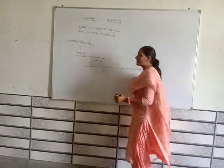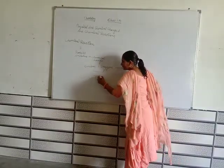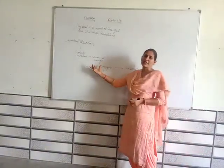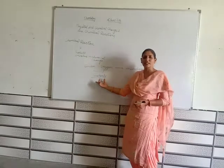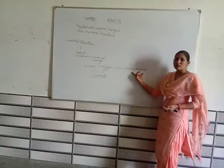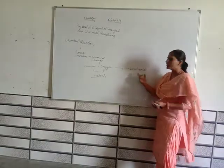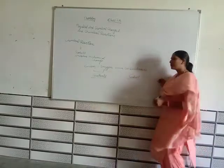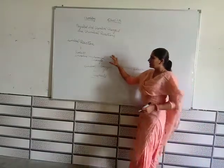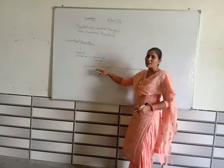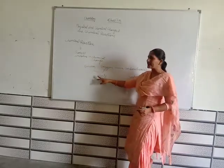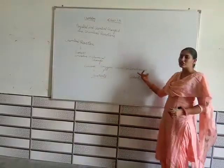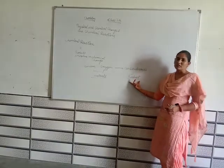The initial substances in a chemical reaction are known as reactants. After the reaction, the substance formed is called a product. In the carbon and oxygen example, carbon and oxygen are the reactants. After the reaction, carbon dioxide is formed — this is the product.